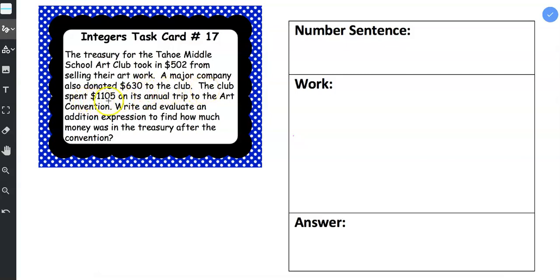The club spent $1,105 on its annual trip to the art convention. Write and evaluate an addition expression to find out how much money was in the treasury after the convention.